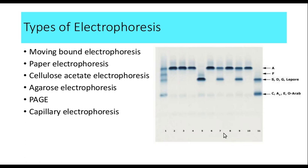Now let us understand the various types of electrophoresis. In the beginning, when electrophoresis was done, it was called moving bound electrophoresis. After that, we started paper electrophoresis. Paper electrophoresis is one step better, then came cellulose acetate electrophoresis, then agarose electrophoresis, and then polyacrylamide gel electrophoresis.